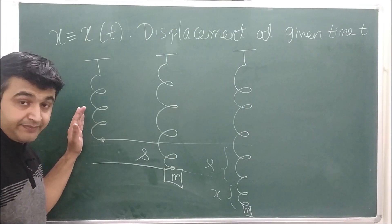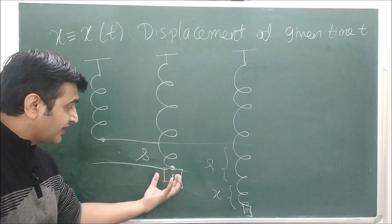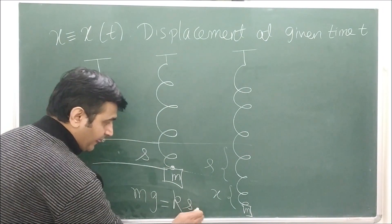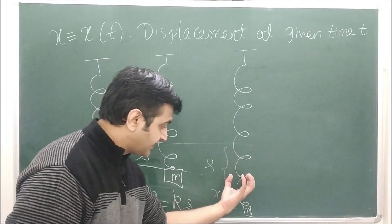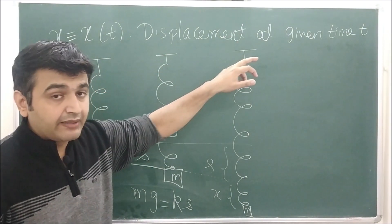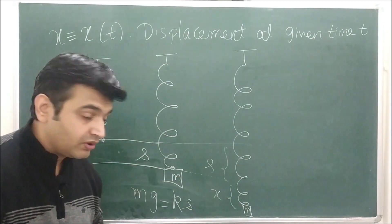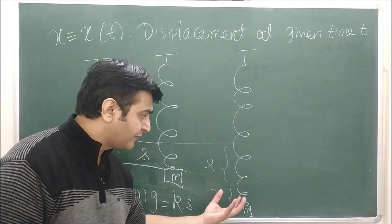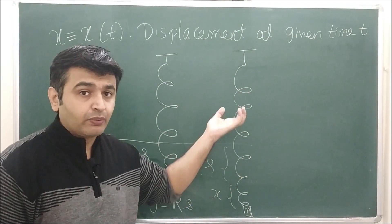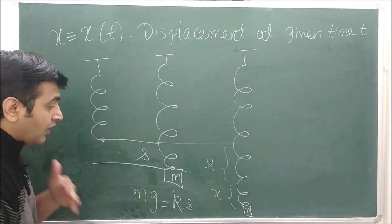Let's model this system. Initially the spring is at rest, then at the equilibrium position we have mg = ks. Now I pull the object and release it so it oscillates. The displacement x = x(t) is a function of time t. When x is positive the object is below the equilibrium position; when x is negative it is above. So downward is positive and upward is negative.